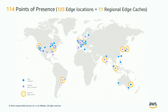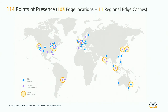CloudFront is highly integrated within the AWS ecosystem from two main points: it's physically integrated with the AWS backbone — AWS's private network — to accelerate data transfer between all services or to your origins. It's also seamlessly integrated from a software perspective with other AWS services, allowing you to tailor custom solutions in a highly integrated environment. CloudFront began in 2008 with 14 edge locations, and over the past 10 years has grown to 114 edge locations across 56 cities and 24 countries. In the past year alone, 39 edge locations were added, and geographic expansion continues.